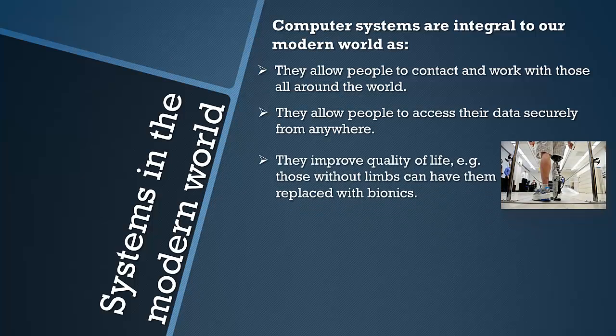Computer systems can also improve quality of life. Recently, those without limbs — such as someone who has lost a leg — can have them replaced by bionics controlled by computer systems. These are complex new technologies that we'll see more of in years to come, and they very much improve the quality of life of those who are injured.